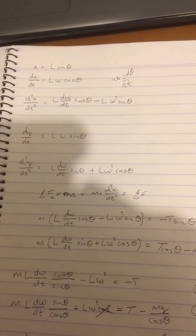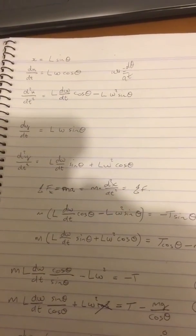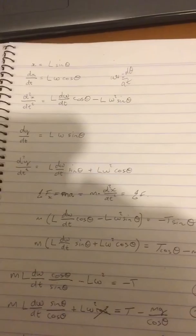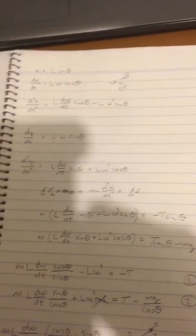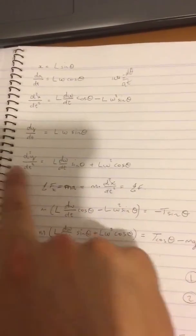Do the same thing where you had y equals minus L cosine theta. We take the derivative, so it's L omega sine theta. Take the derivative again. So that's the first half of the question done.